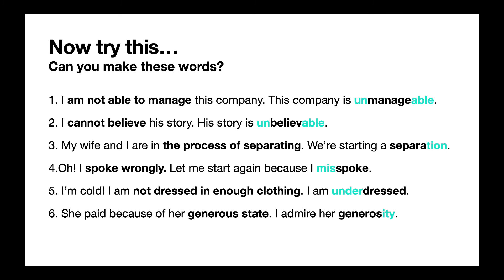Number three: my wife and I are in the process of separating — we're starting a separation. '-tion' shows us the action or process of doing something, and the verb is separate, so we make it into separation. Number four: I spoke wrongly — let me start again because I misspoke. We said wrongly, we would use the prefix 'mis.' So misspoke means to say something wrongly. Number five: I'm cold — I am not dressed in enough clothing. I am underdressed. Not enough, so we use the prefix 'under.' If you are not wearing warm enough clothing, you're underdressed.